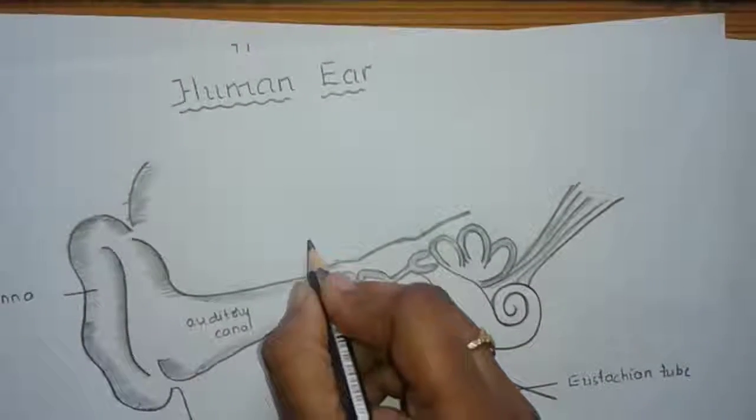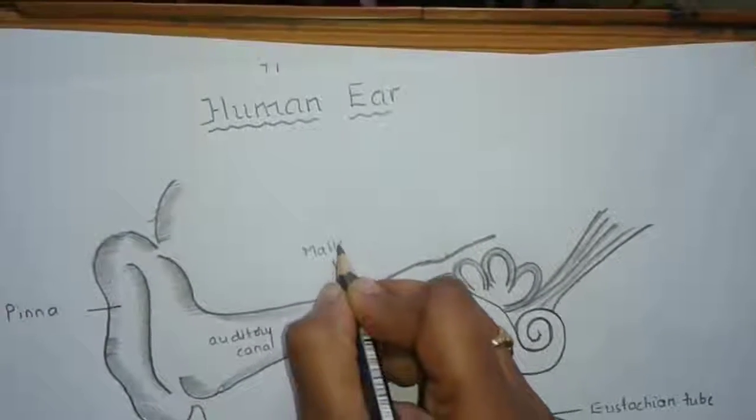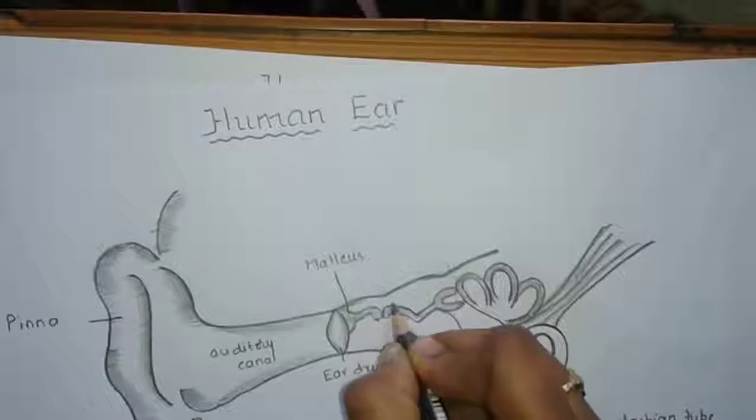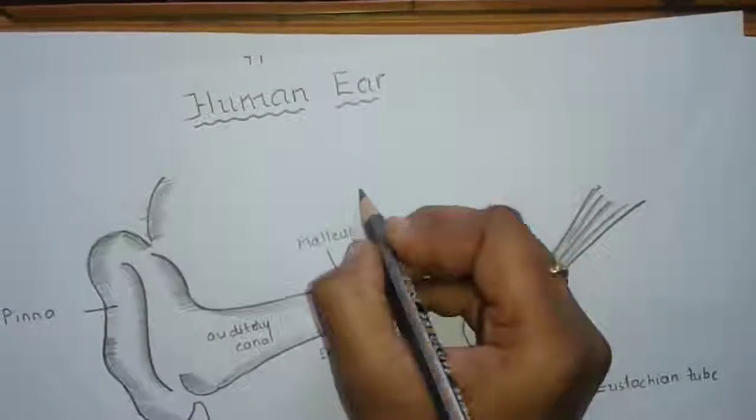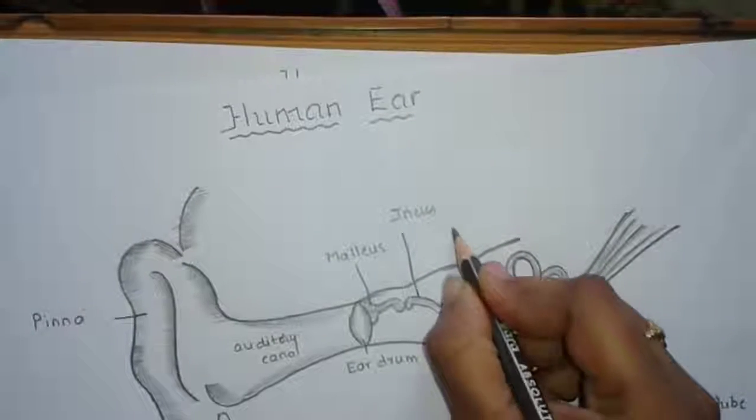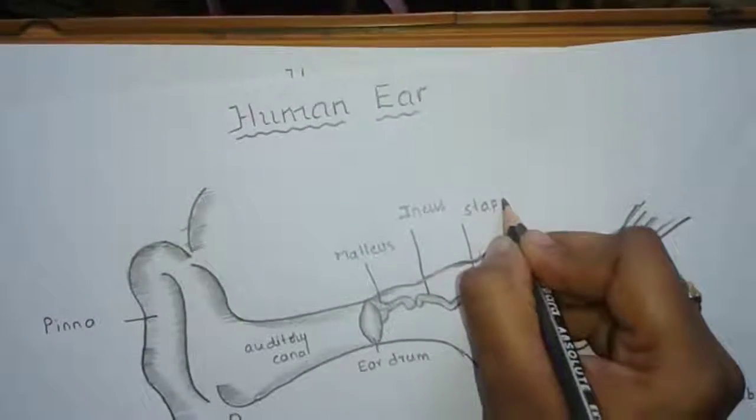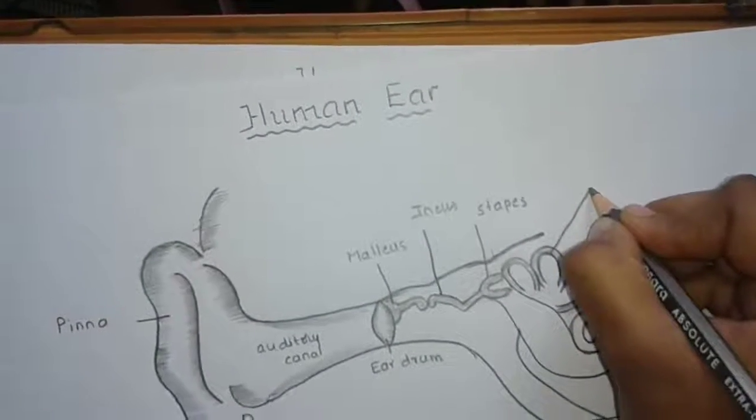Middle ear consists of three small bones. First one is malleus. Second bone is called incus. Third bone is called stapes, and the three semicircular canals.